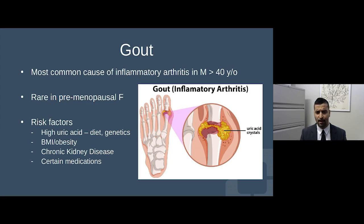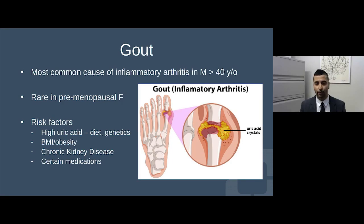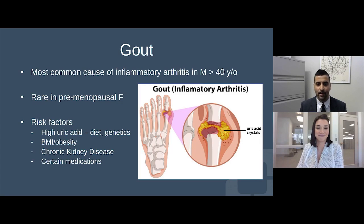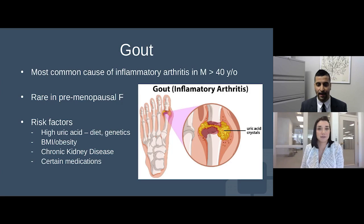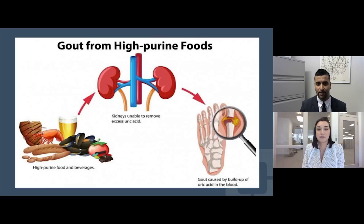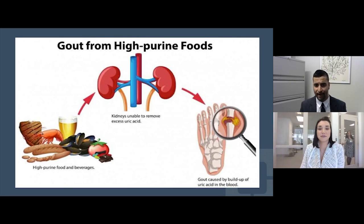I must mention gout — the most common cause of inflammatory arthritis, affecting roughly 4% of the population, predominantly men. Gout is technically rare in premenopausal women because estrogen helps decrease uric acid. We all have uric acid in our blood; it's a cellular turnover marker, and high uric acid can clump together, deposit on joints, and cause a red-hot swollen joint. Risk factors include body mass index, chronic kidney disease, and diet high in purines — red meat, shellfish, shrimp, beer, high fructose corn syrup, soda. The classic presentation is a middle-aged man with a red-hot, warm, swollen big toe causing excruciating 10-out-of-10 pain.